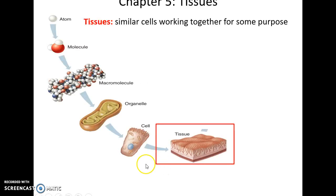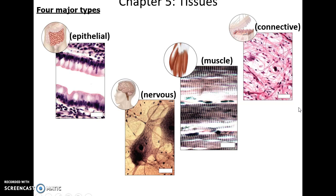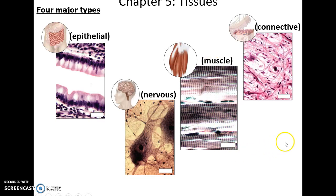Tissues are similar cells that work together to perform some function, so you have many cells all together. There are four main types of tissues: epithelial tissue that lines surfaces, nervous tissue found in our brain and spinal cord, muscle tissue found in skeletal muscles and many organs, and connective tissue found throughout the body — connective tissue being very, very diverse.